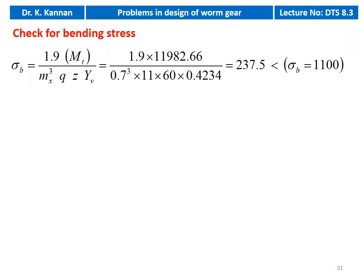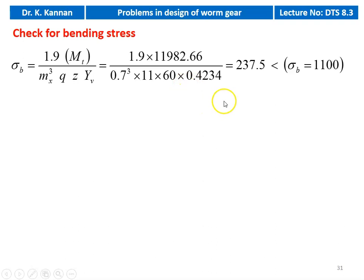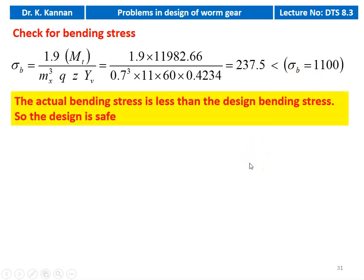Similarly, we check for the bending stress: sigma_b = 1.9 × MT_design / (MX³ × Q × Z × Y_v) = 1.9 × 11,982.66 / (0.7³ × 11 × 60 × 0.4234) = 237.5 kgf/cm², which is less than the design bending stress of 1100 kgf/cm². The actual bending stress of the worm gear drive is less than the design bending stress. The design is safe.